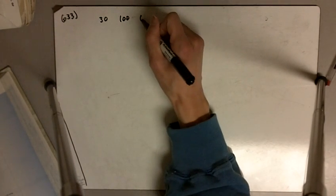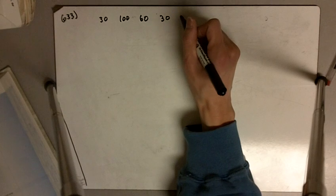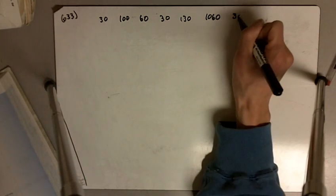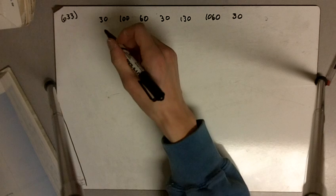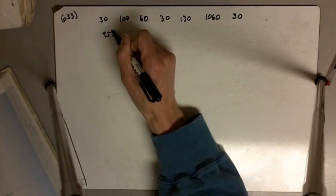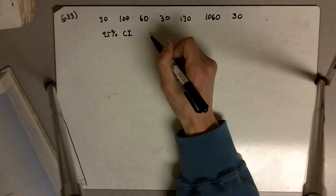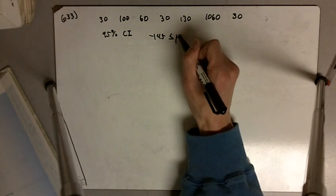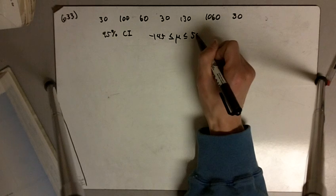We've got 30, 100, 60, 30, 130, 1060, and 30. And then it says we can make a 95% confidence interval, and that gives us minus 145 is less than or equal to mu, less than 556.